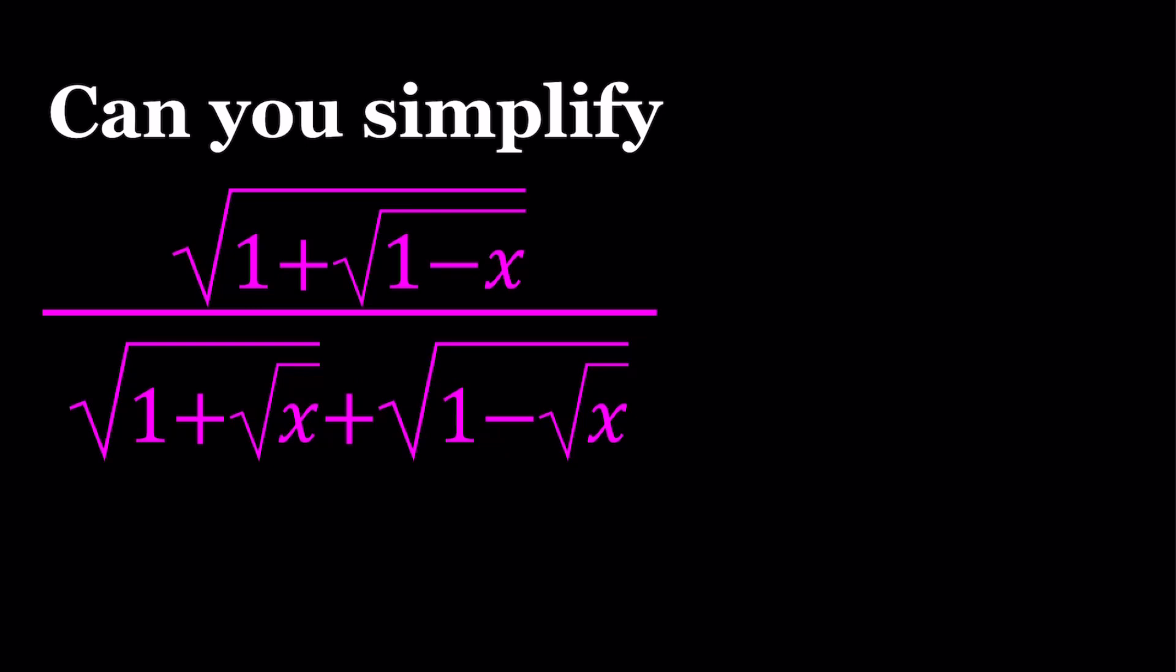So I'm going to go ahead and walk you through the solution and also show you a graph, which is pretty interesting. And obviously there are some domain arguments, which we can get to later. Let's just skip that part, the boring part, and set this equal to a. And then you can also set it equal to r for radical, and then we're going to square both sides.